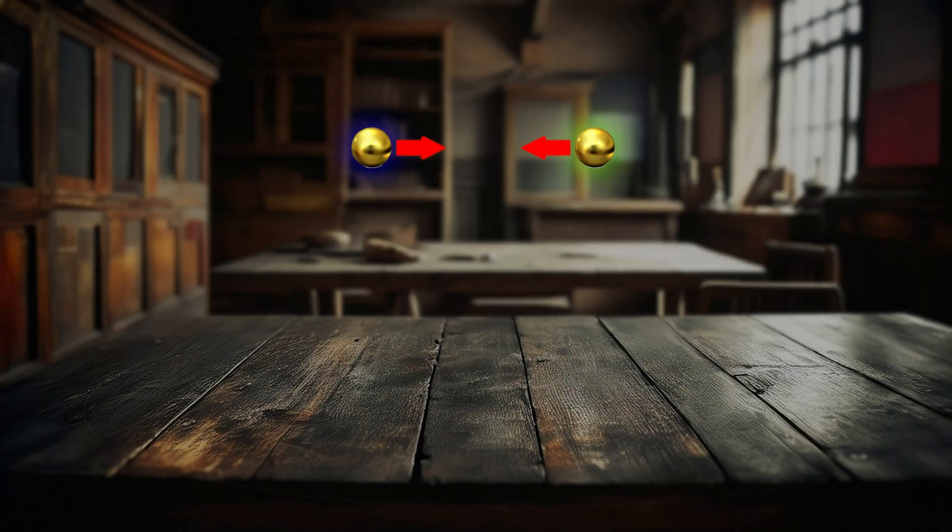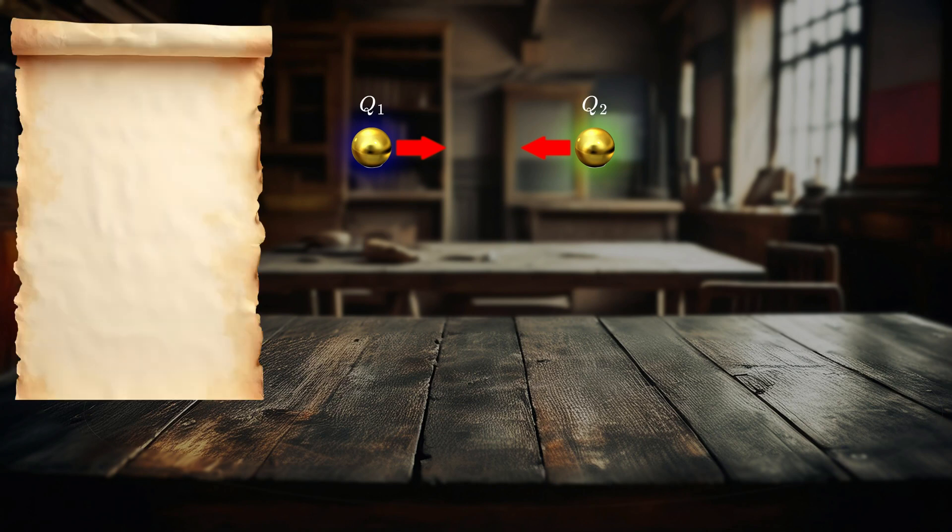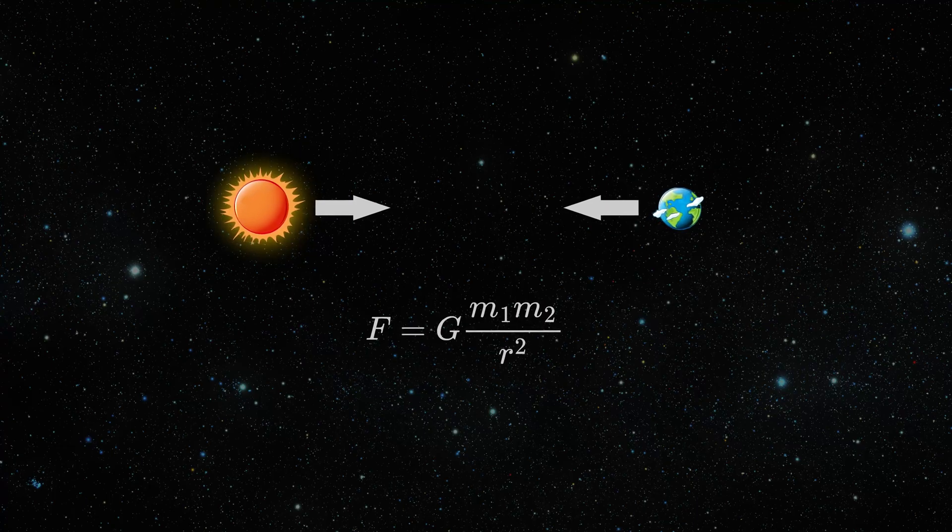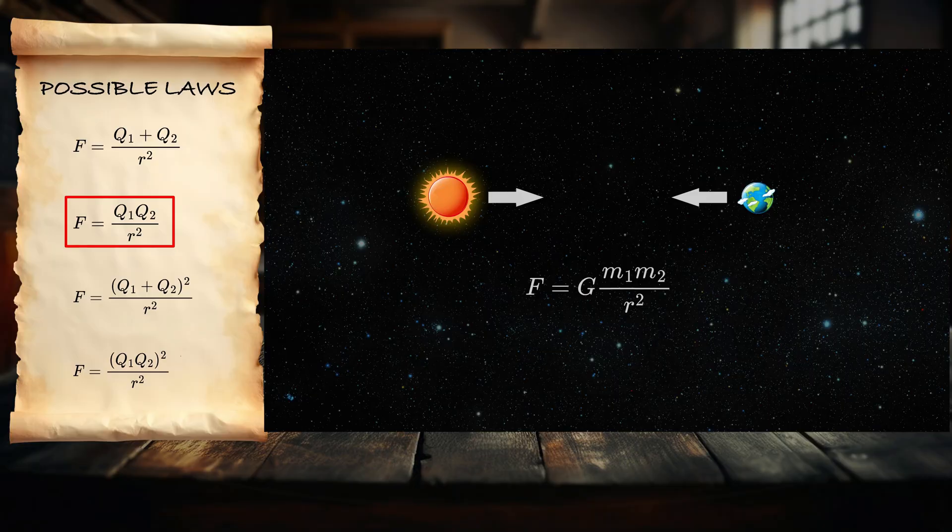Let's call the amount of electricity each body contains as Q1 and Q2. What could the law be then? Should we make the sum, multiply, sum and square, or multiply and square? Looking at the gravitational law, we have the best candidate. But this is just guessing, it's not physics.